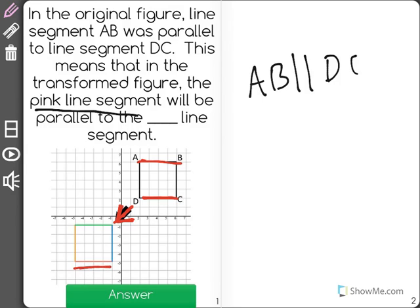The pink line segment down here correlates directly with line DC. Line AB would be up here.